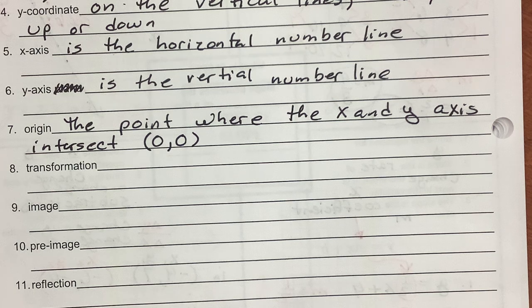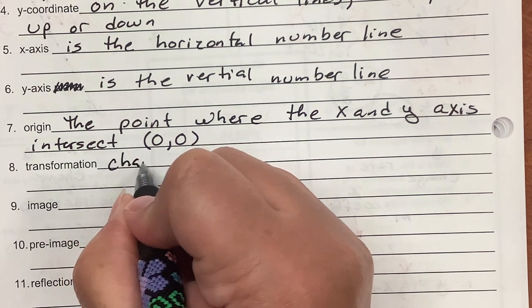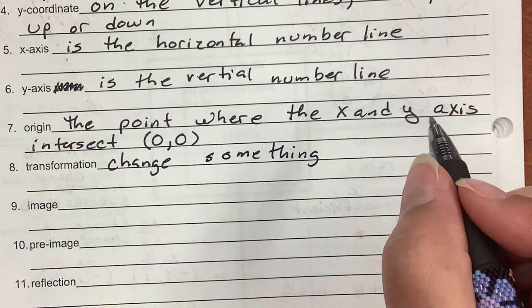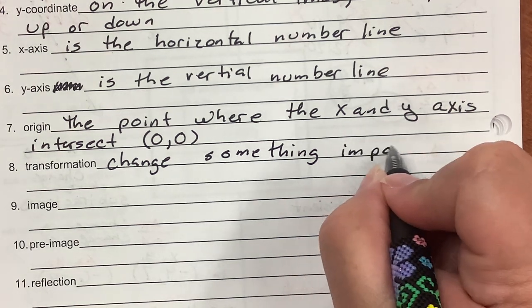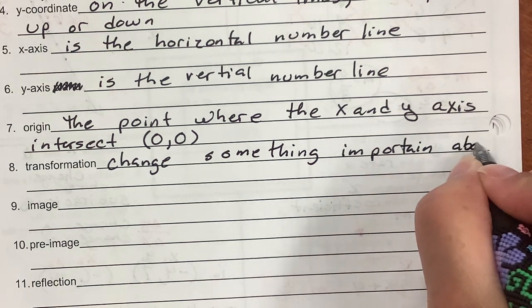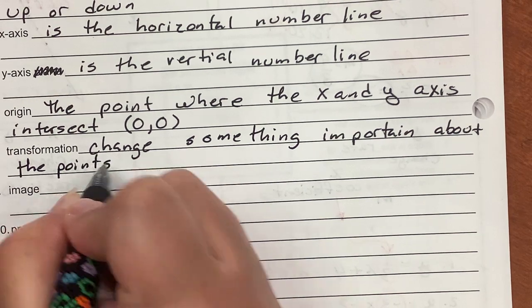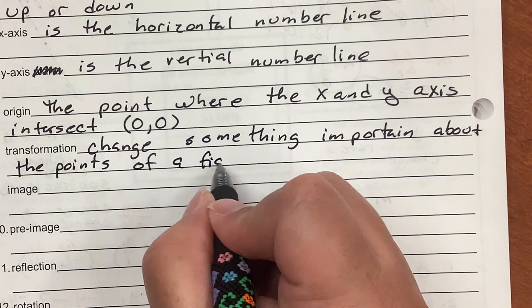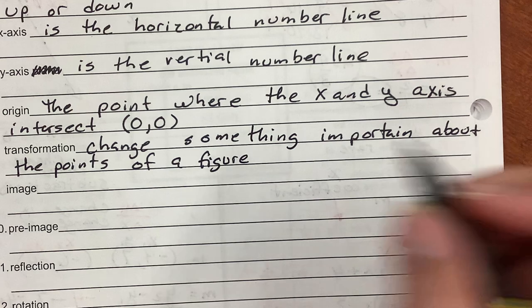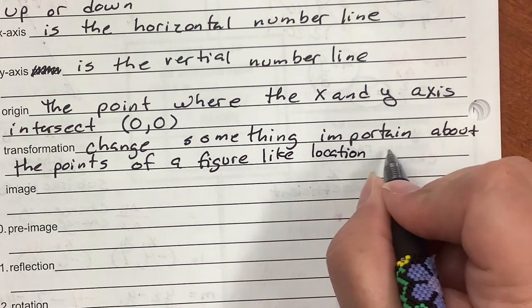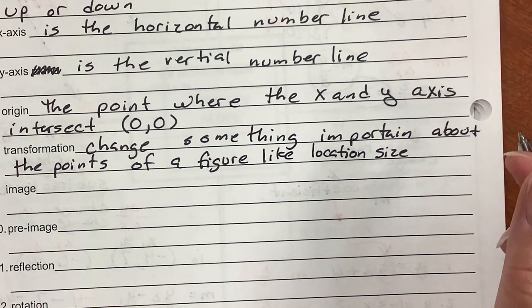A transformation changes something important about the points of a figure. Possible changes include location, size, or orientation - the direction that it is pointed in.